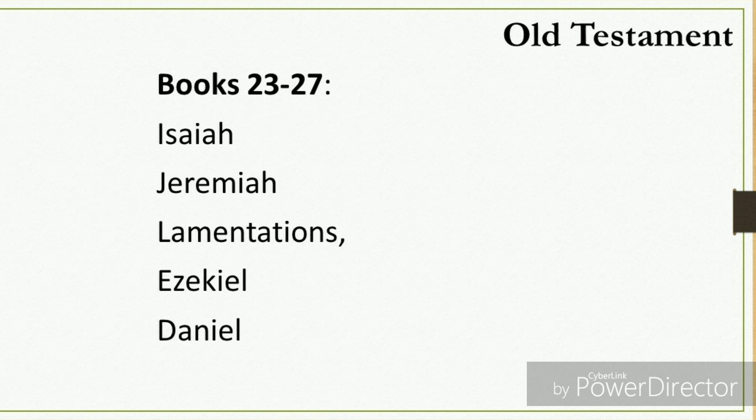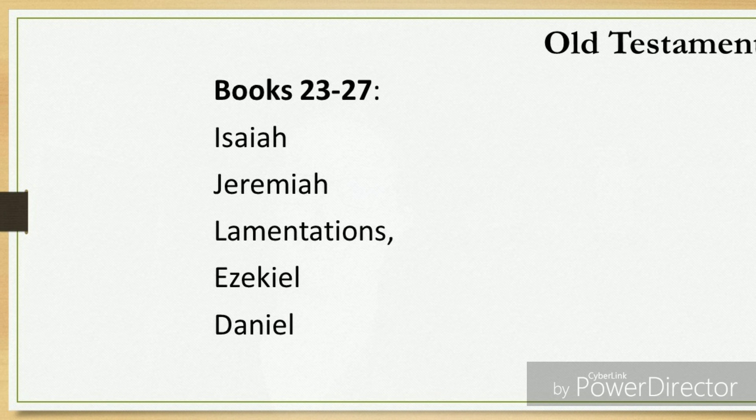Books 23 through 27 are called the Major Prophets. They're called Major because they are longer books. These include prophecies that have been fulfilled in the time of Israel, some fulfilled when Christ came to earth, and some yet to be fulfilled in the last days or end times. Books 28 through 39 are the Minor Prophets. These books are called Minor Prophets because their books are a lot shorter.